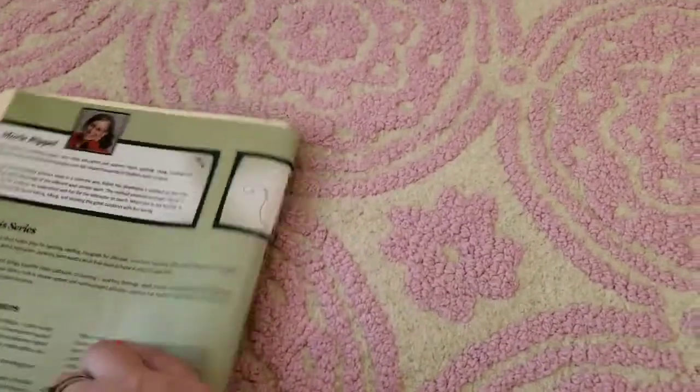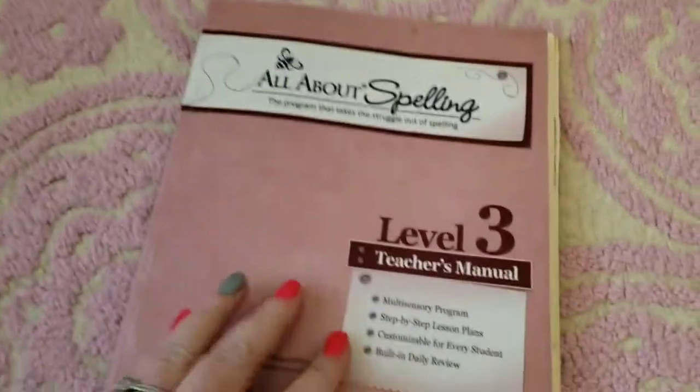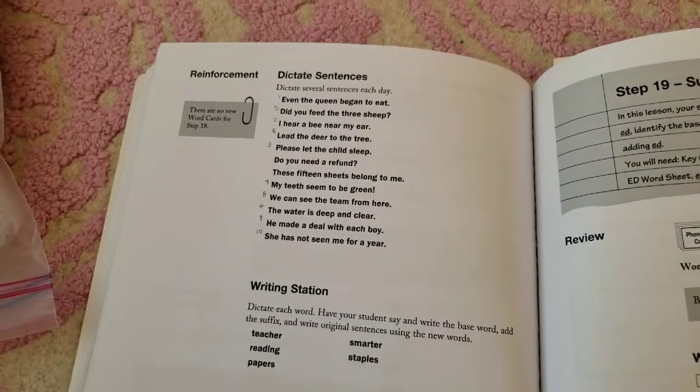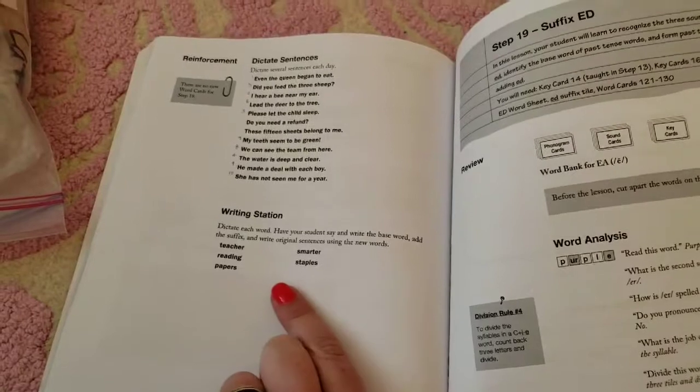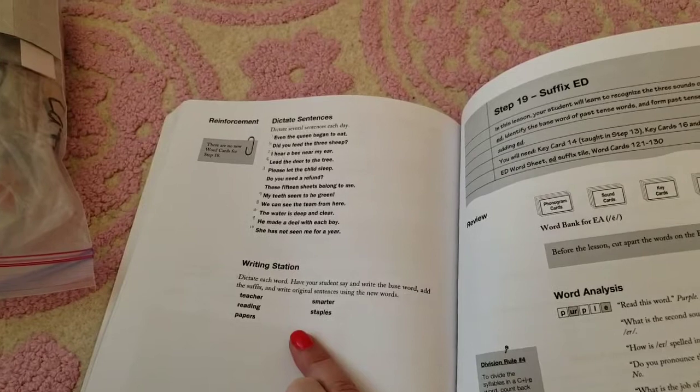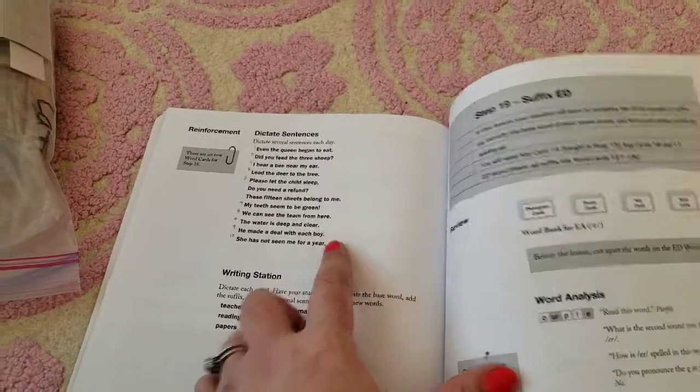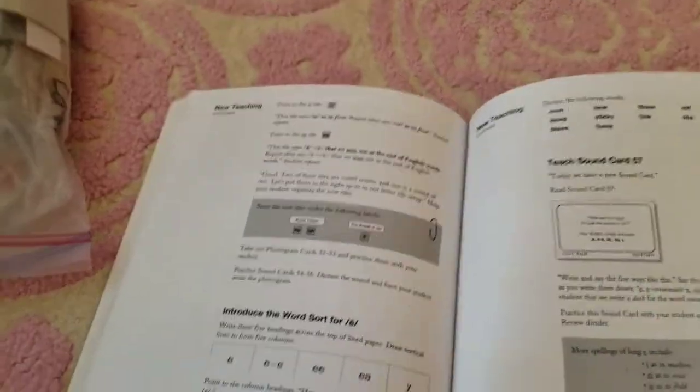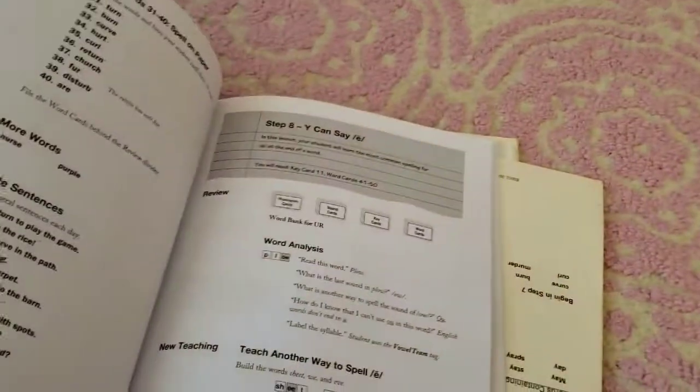And then level three. Now they're dictating sentences. I believe they're dictating sentences in number two also. And this is a writing station where you tell them the words and you just have them write it and use it in a sentence. This they're actually copying the sentence you told them. So there's the new words.